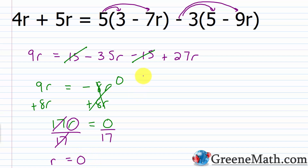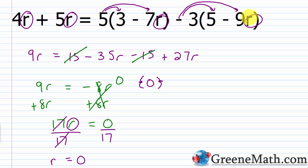My solution set contains one element, and that element is 0. If you want to check this, all you do is plug 0 in for each R in the original equation, and you'll see that the left and right sides give you the same value. That's how you know your solution is correct.